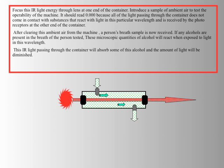When the machine is first queued up to measure a subject sample, the first thing that happens is a blank sample is passed through. That blank sample should contain no alcohol whatsoever, and the measurement should read 0.00 because there isn't any alcohol in it. After that, the subject blows into the machine and then the light is shined through again.